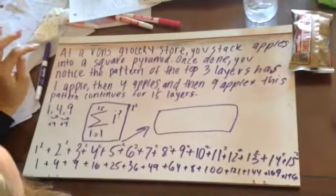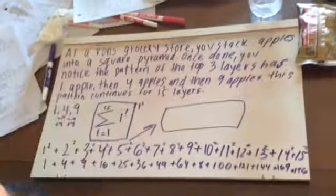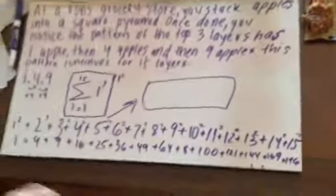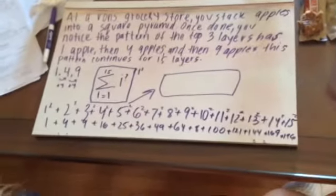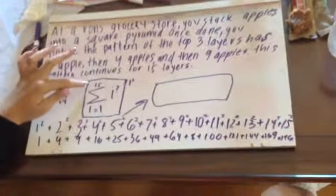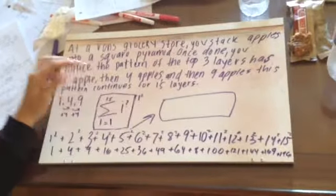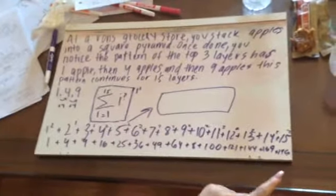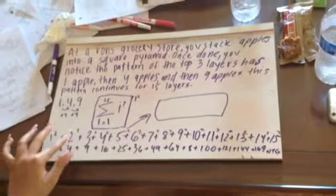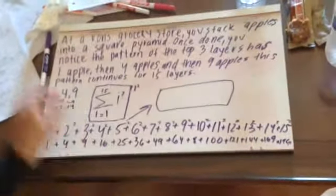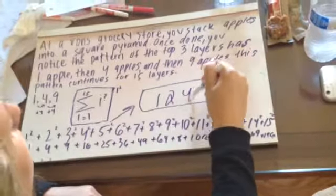At Vaughn's grocery store, you stack apples into a square pyramid. Once done, you notice the pattern of the top three layers: one has one apple, then four apples, then nine apples. This pattern continues for 15 layers. You make this summation, put 15 on top, then this symbol. You put I equals 1 and I equals question mark. You have to put 1 until 15, and they all have to be squared. So you put 1 squared, 2 squared, 3 squared, until 15 squared. Then you add those all up and get 1,240.